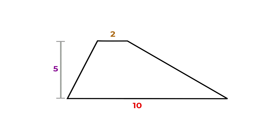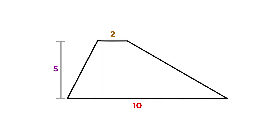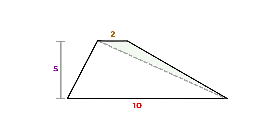One way that we can split this trapezoid into two triangles is by drawing a line from the top left corner to the bottom right corner. As a side note, if you draw the opposite line from the bottom left to the top right, that also works. Now we have two triangles.